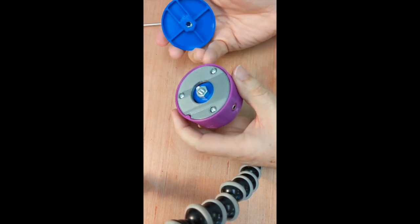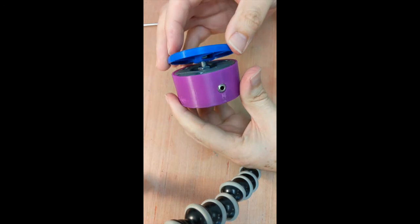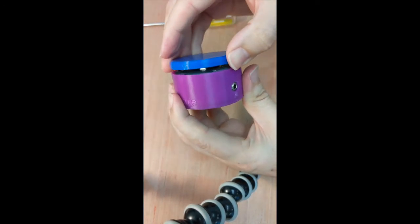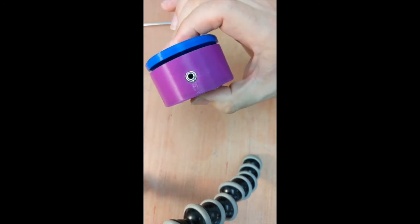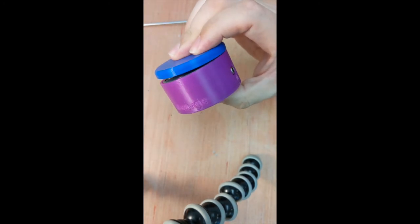For the last step, twist the button cover until snug. Be careful not to over tighten. Congratulations! You've just assembled an MMC60 round flexure switch.